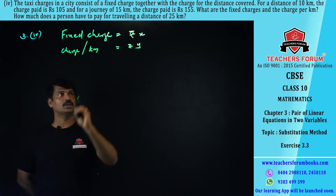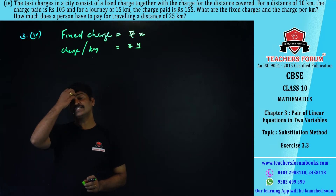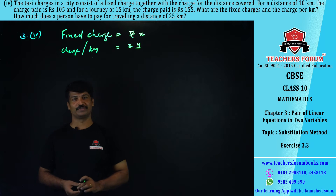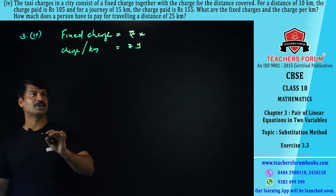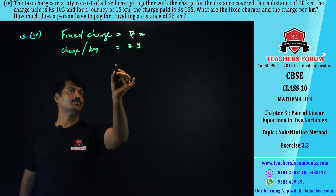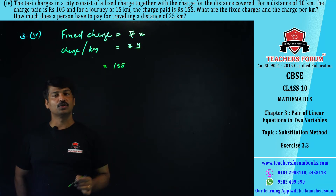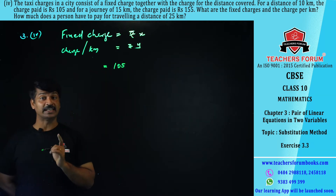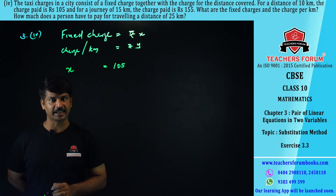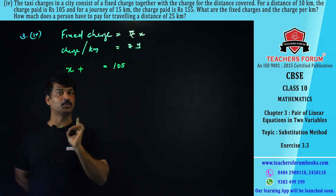Fixed charge is x and per kilometer charge is y. It is given that if you travel 10 kilometers you pay rupees 105. This 105 consists of two parts: the fixed charge x, and the per-kilometer charge y for 10 kilometers.